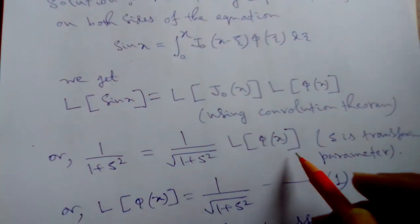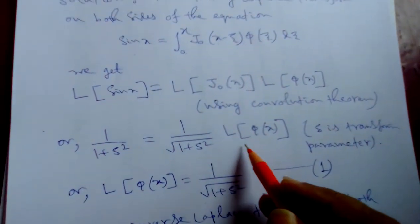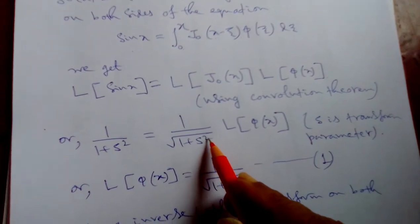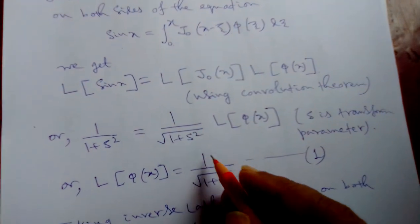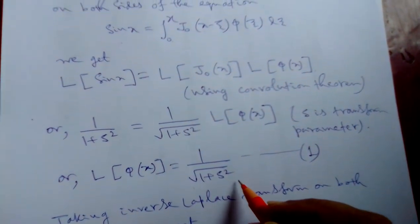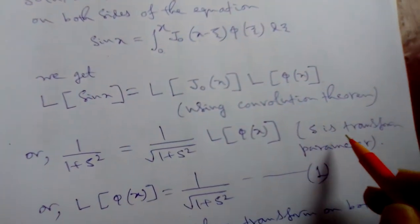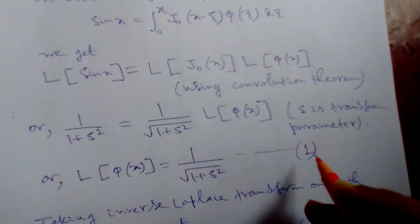And L of phi(x). Now we are taking L of phi(x), and after converting this result, root of 1 plus h squared by 1 plus h squared, we are getting root over 1 plus h squared. This is the transform parameter and taking it equation number 1.